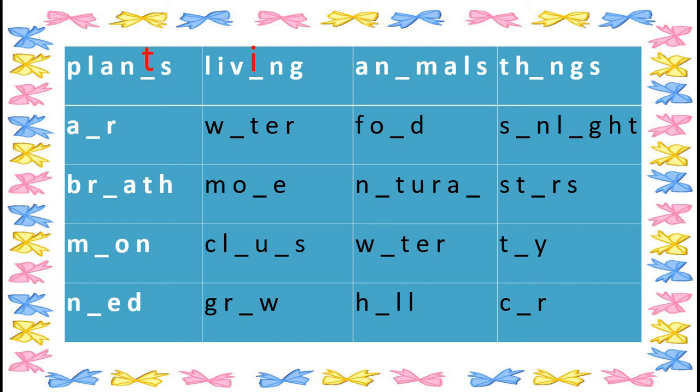Now look at the third word and fill here to complete the word. Can you guess children, which letter we need to fill here to complete the word? Very nice — I. Now it becomes animals.